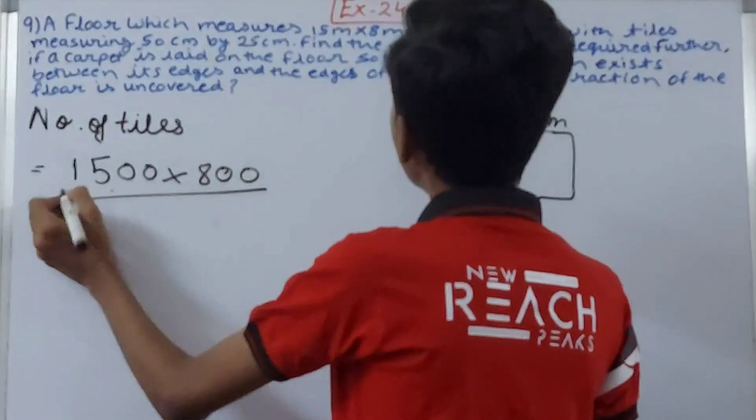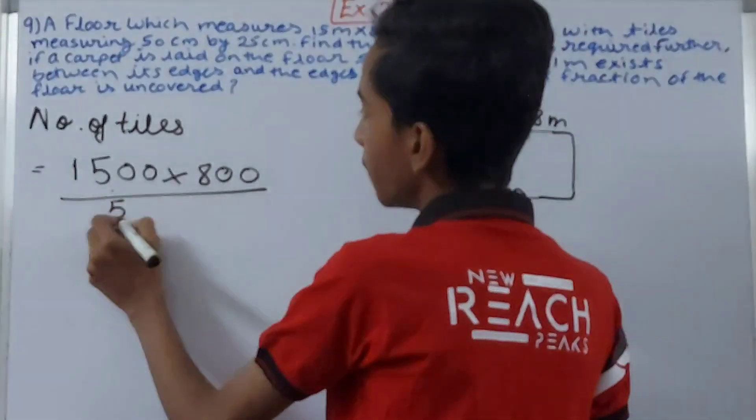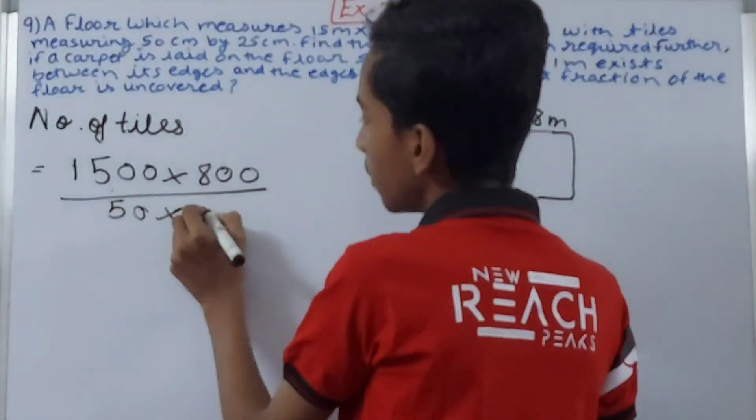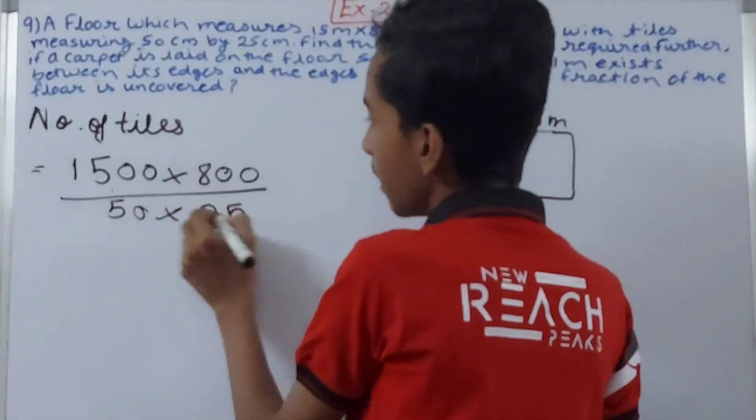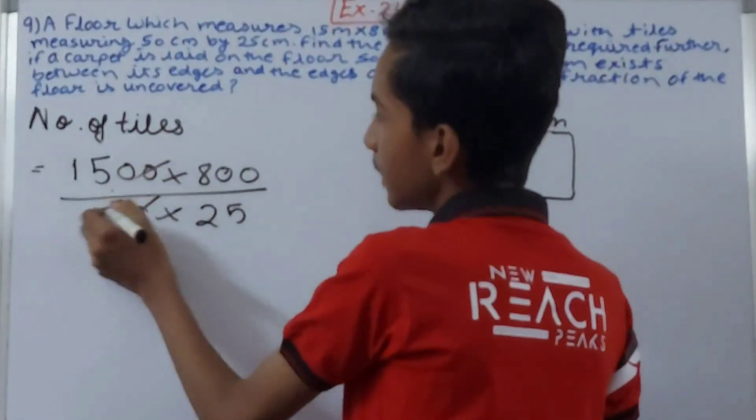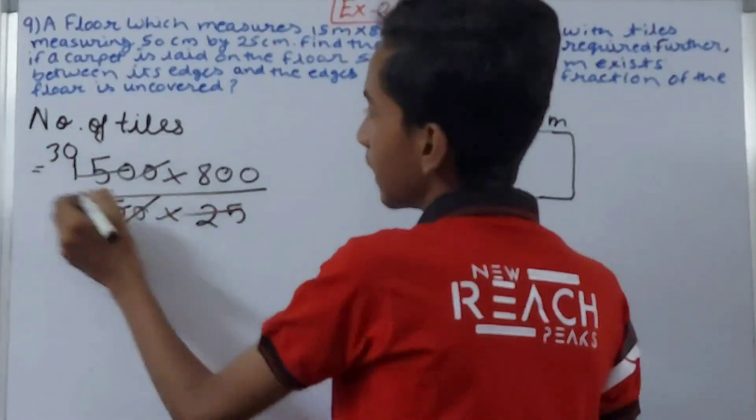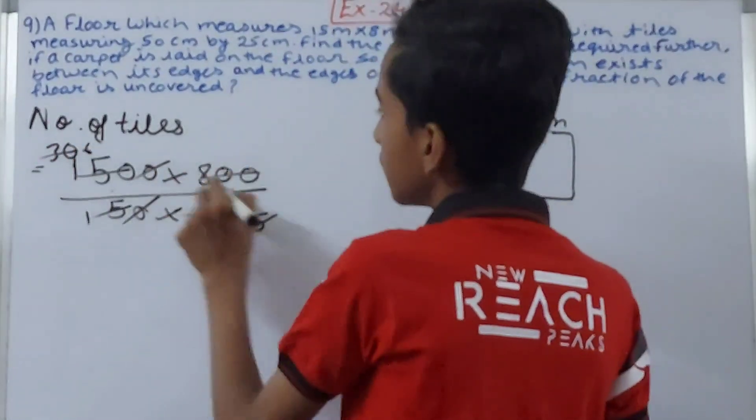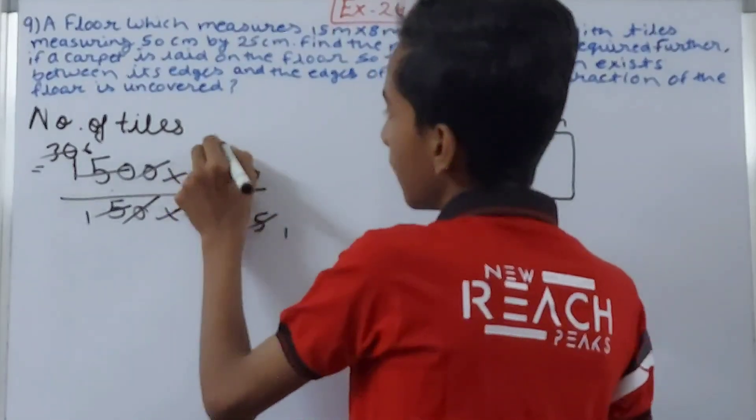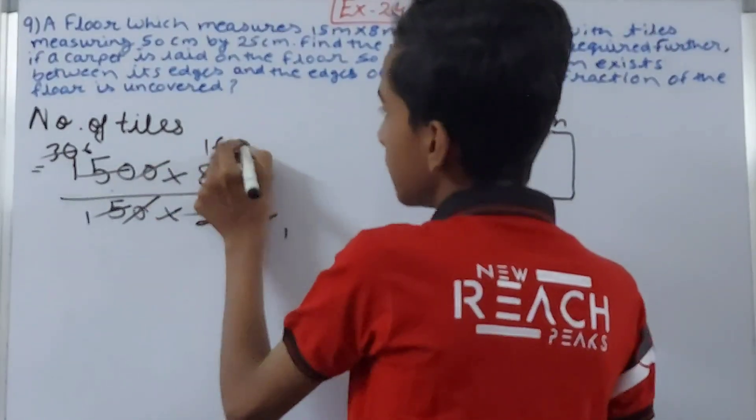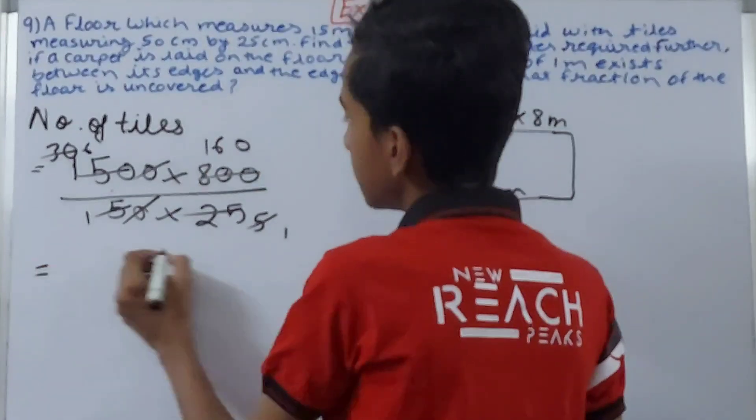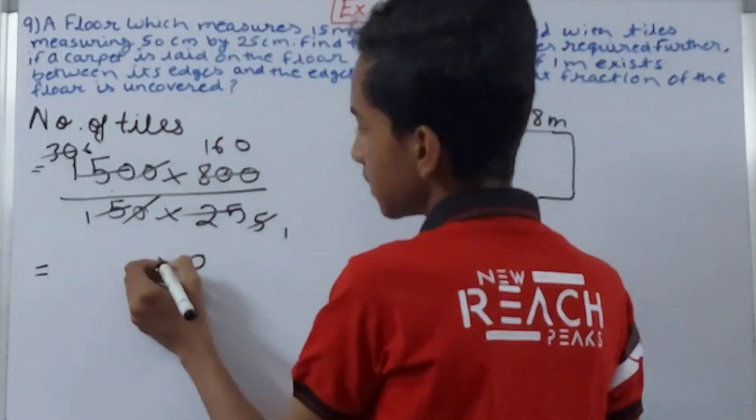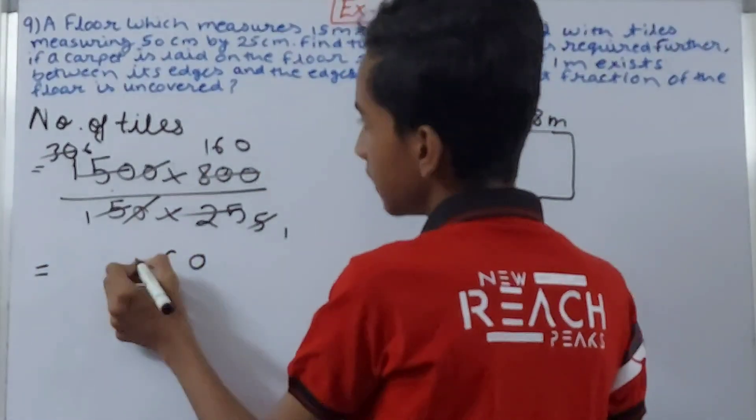Upon centimeters, 50 into 25. Keep it as it is. So this will be 130 and then again 5, 6, 1, 1, and 6, and 0, 160. 6 into 6, 0, 6 into 6 becomes 36 and 3. So 6 into 6, 960 tiles will be needed.